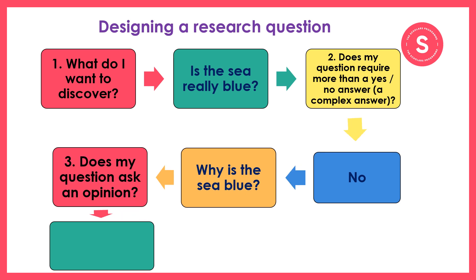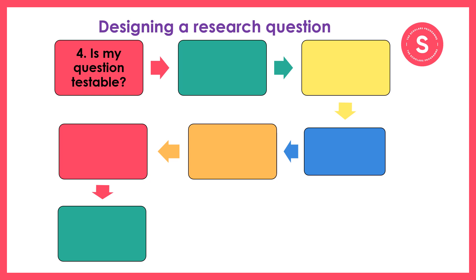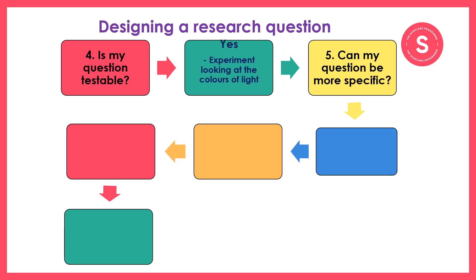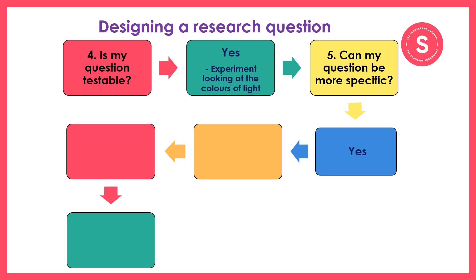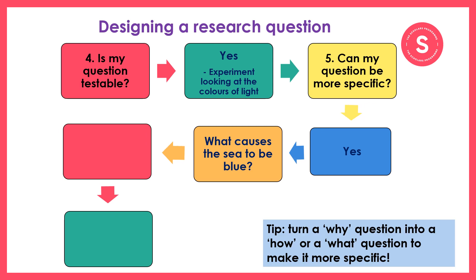Now I'm going to ask: does my question ask an opinion? No, there's no opinion that question is asking for. I'm now going to ask: is my question testable? Yes, it is — I am able to test my question by testing out how light makes different colours. It's possible to do an experiment to understand why and how different colours are seen, so I don't need to change anything for the moment. Next, I'm going to ask: can my question be more specific? Your answer to this will always be yes. It's good to ask this question to really force you to work out how to make your question more specific, more focused. I'm going to write: 'What causes the sea to be blue?' Turning a why question into a what or how is a way to make your question more specific.